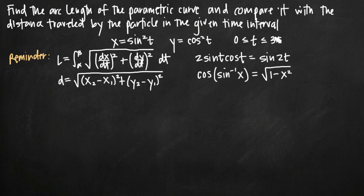In order to calculate the distance traveled by the particle, we're going to use the distance formula. In order to calculate the arc length of the parametric curve, we're going to use the arc length formula: L equals the integral from alpha to beta of this function. We're going to use the distance formula first, and in order to use it we need to eliminate the parameter. Keep in mind that we're trying to compare the arc length and the distance at the end of the problem — hopefully they match.